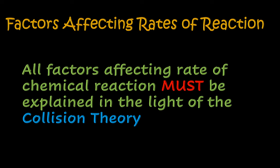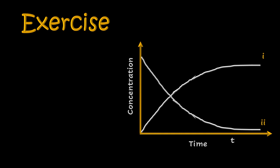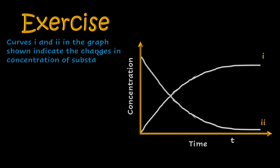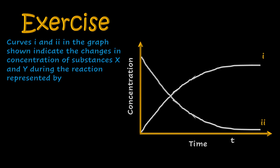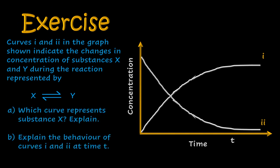Before looking at all these factors, let us look at a small exercise to check the key points from this lesson. Consider the graph to your right — it has curves one and two, representing the changes in concentration of substances X and Y shown in the equation. Which curve represents substance X and what is the explanation for that? What is the behavior of curves one and two at time t? Let us meet during the review class to see if you had it correct.